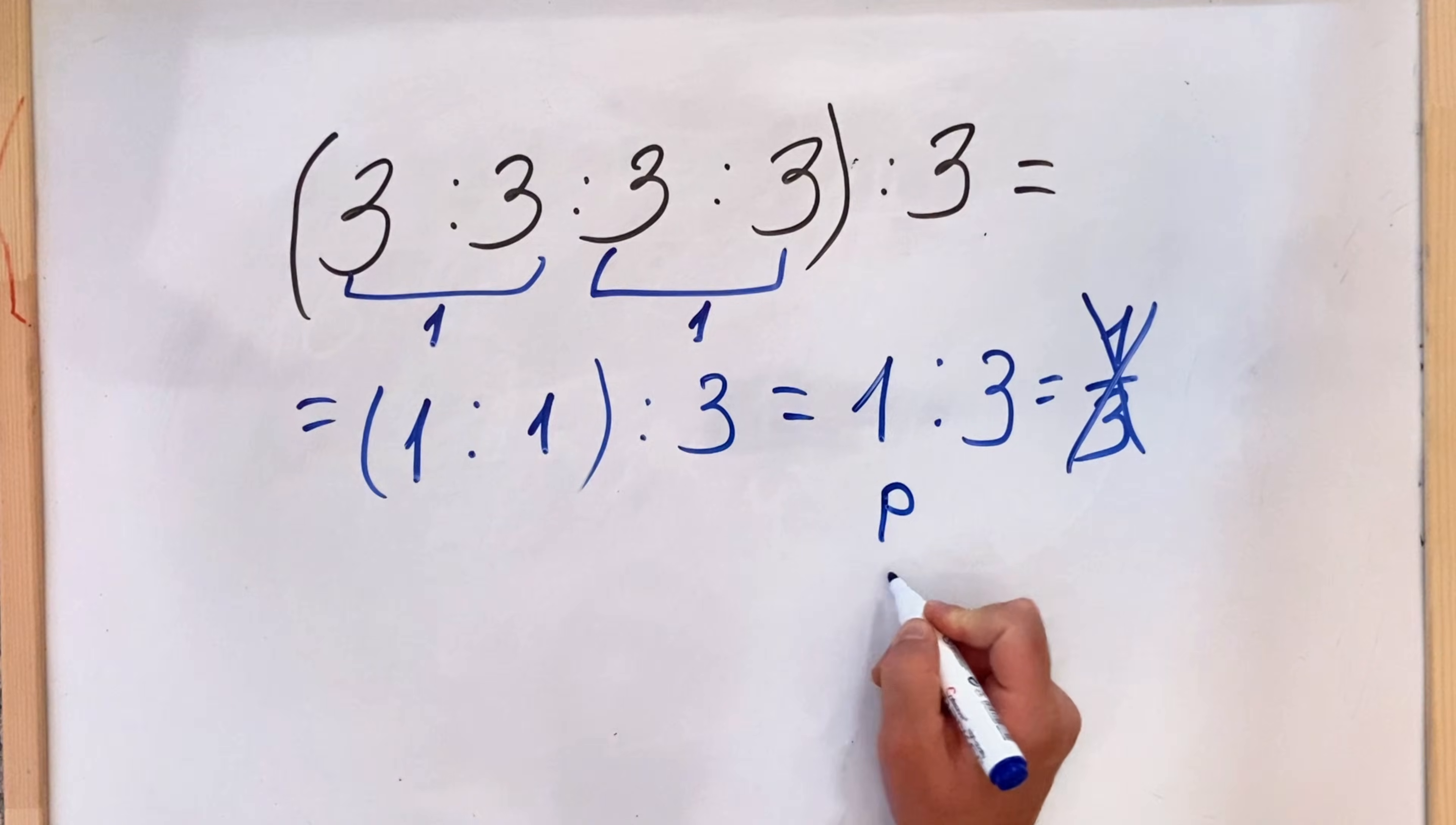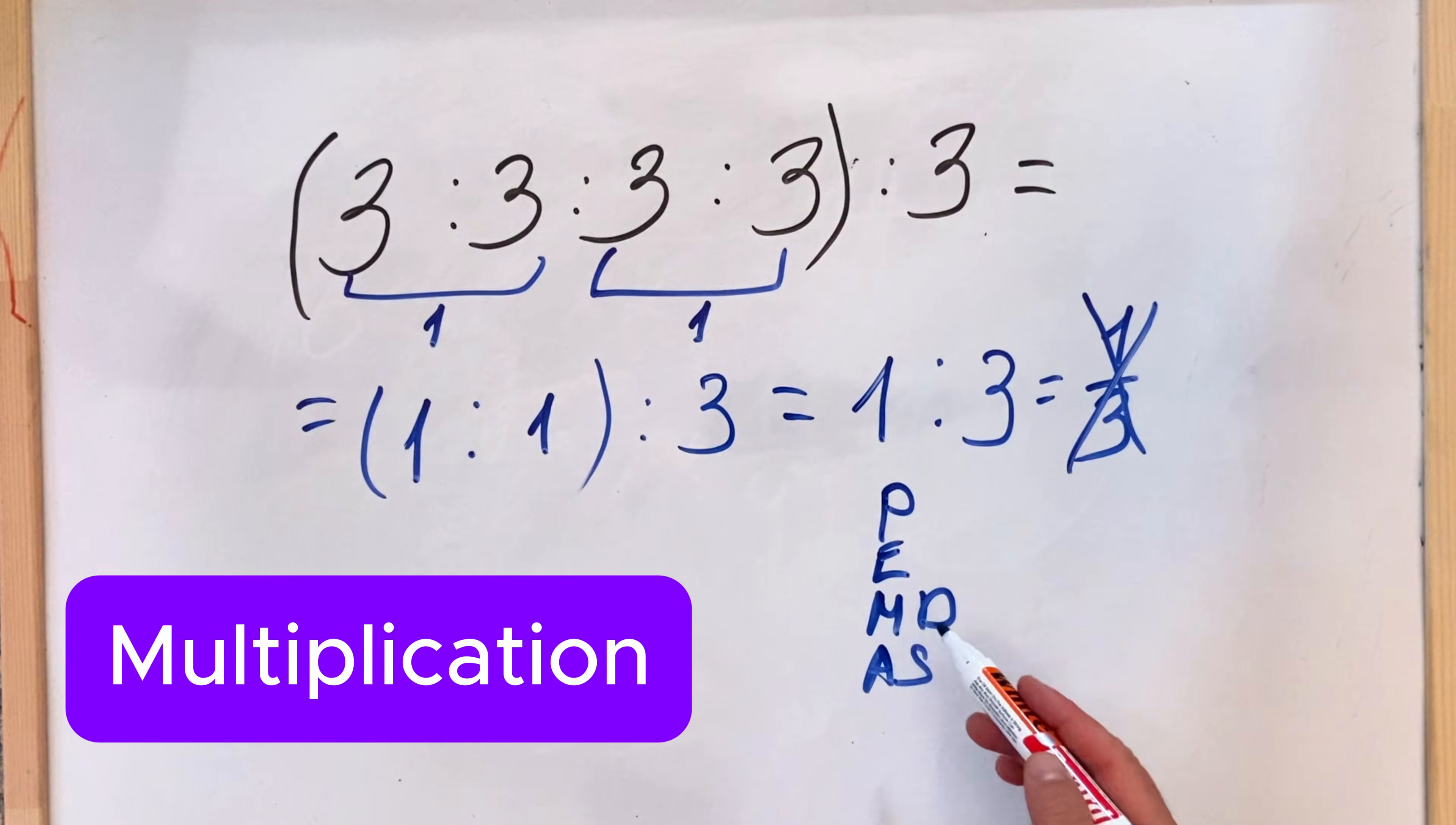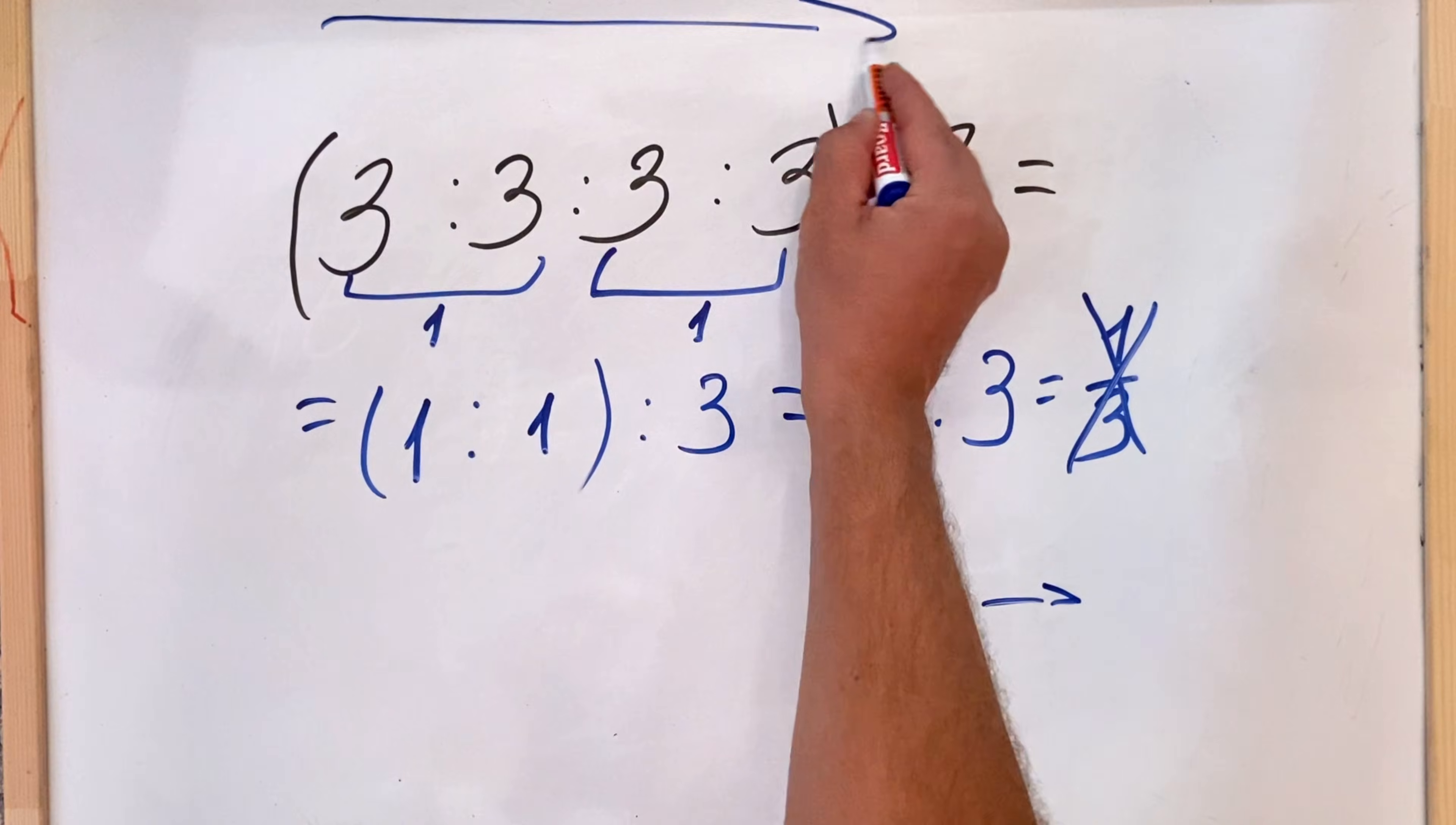If you remember PEMDAS, which P stands for parentheses, E stands for exponents, M for multiplication and division, and A for addition and S for subtraction. In our case, we don't have parentheses, we don't have exponents, we don't have multiplication, but we have division. So when we have multiplication and or division, we need to do everything from left to right.